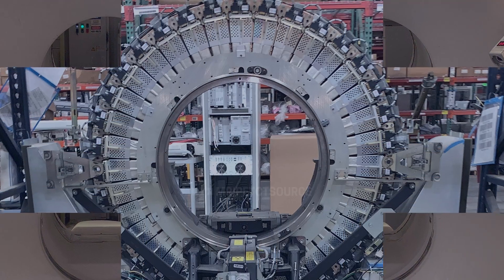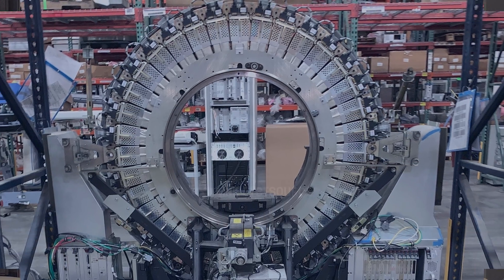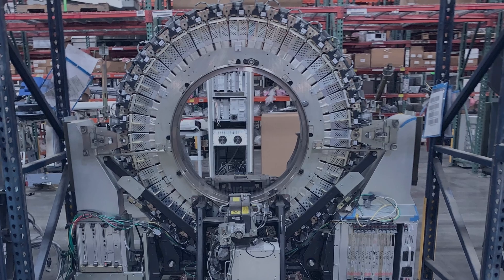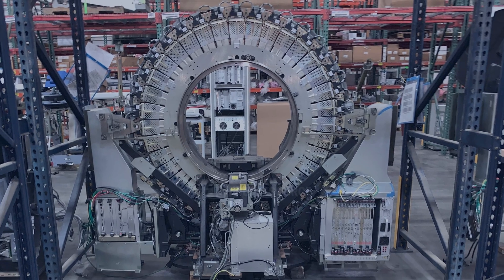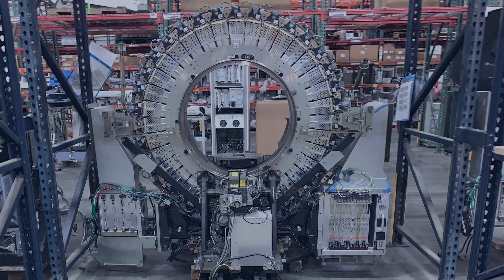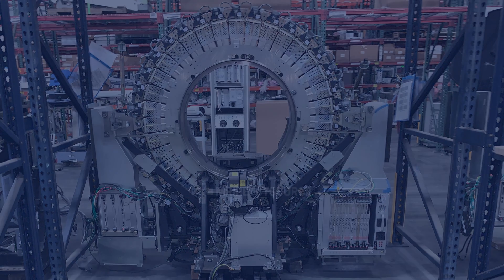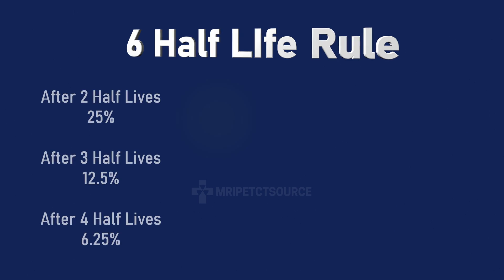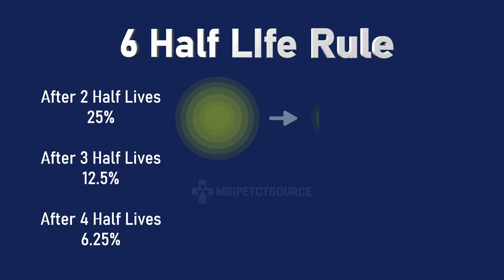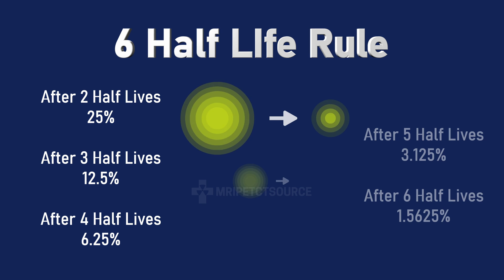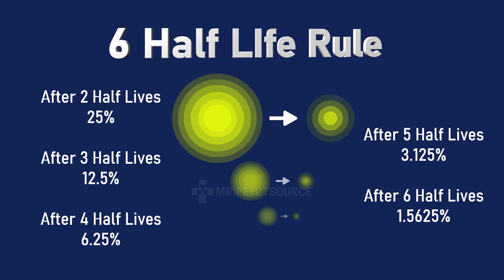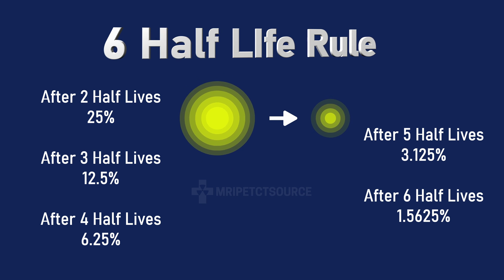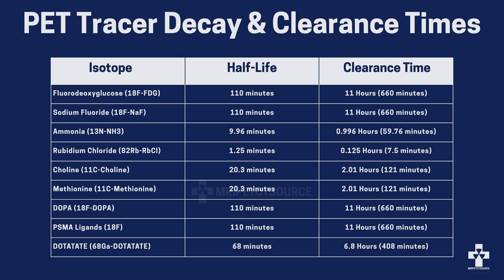However, a simpler and widely accepted way to estimate radiation decay is by using the six half-life rule. After six half-lives, more than 98% of the radioactivity has decayed and the patient is generally considered to be no longer radioactive.